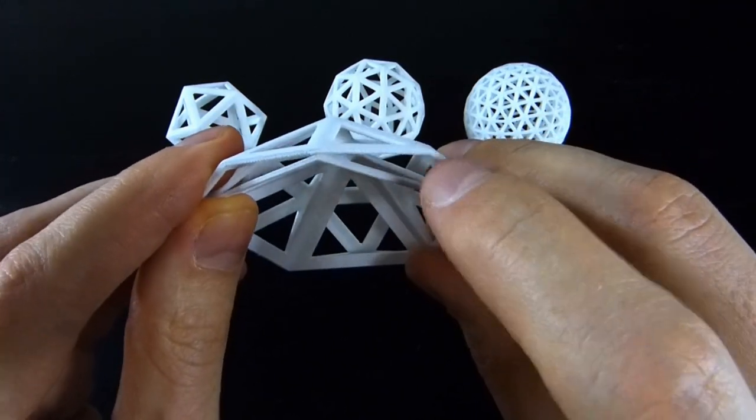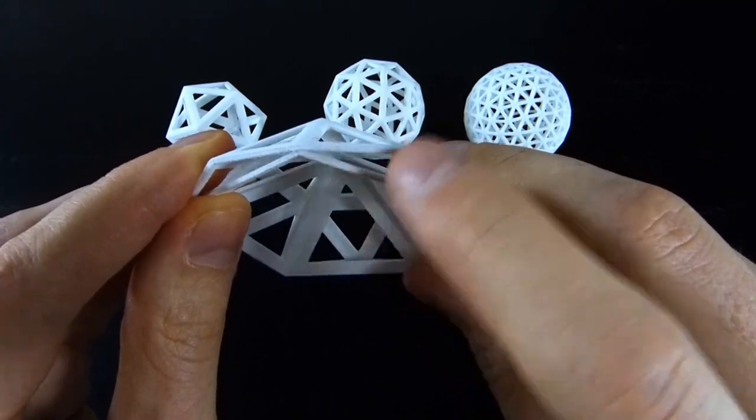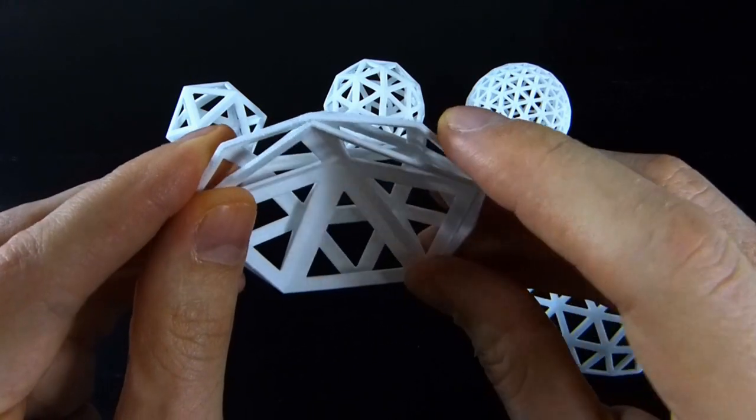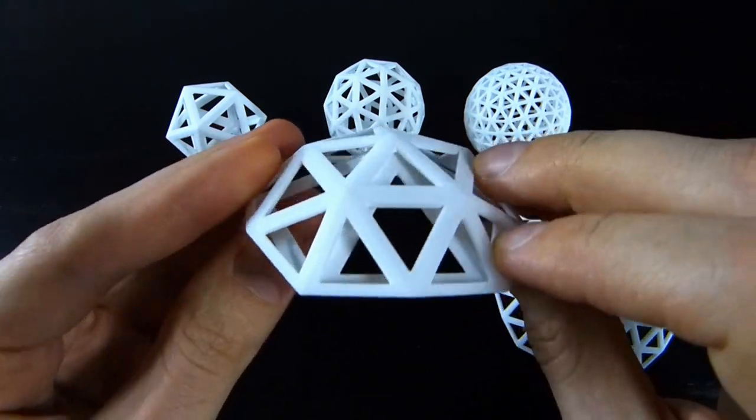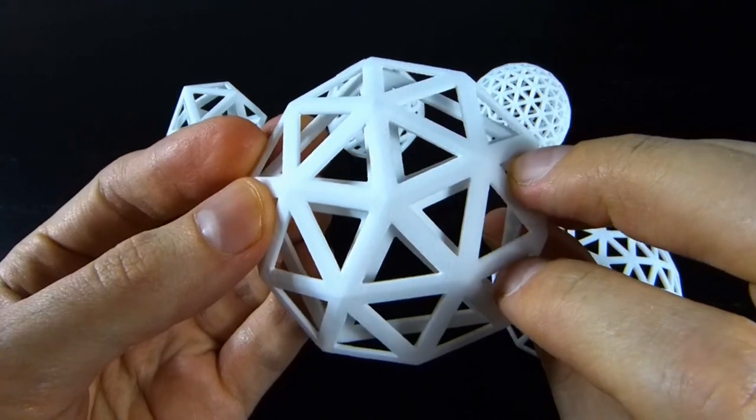And what you want to do is move those extra vertices radially outwards onto the sphere that circumscribes the icosahedron, and you get something that's more spherical.